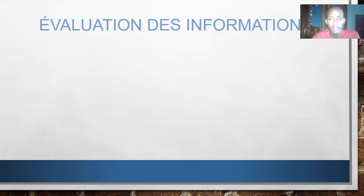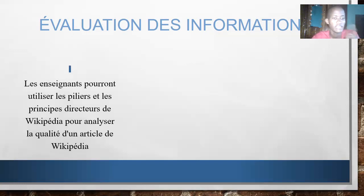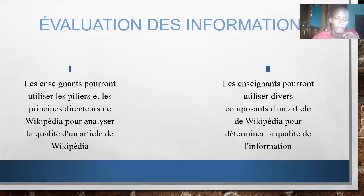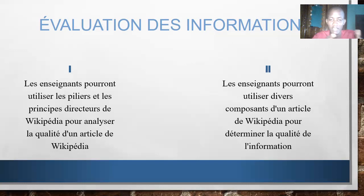Nous allons leur montrer comment évaluer l'information. Évaluer l'information va sans doute dire que les enseignants pourront utiliser les principes fondateurs de Wikipedia pour analyser la qualité d'un article Wikipédia. Les enseignants pourront utiliser divers composants d'un article pour déterminer sa qualité, car la qualité varie d'un article à l'autre — certains sont de bonne qualité, d'autres sont en ébauche ou en phase de construction.